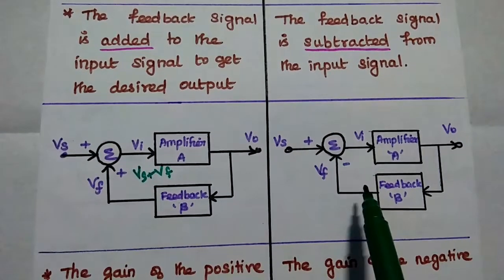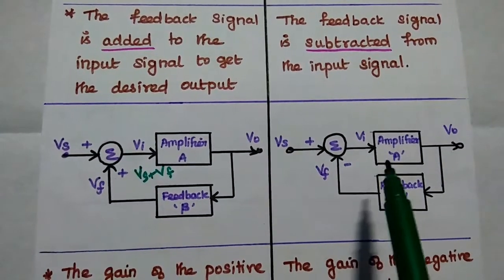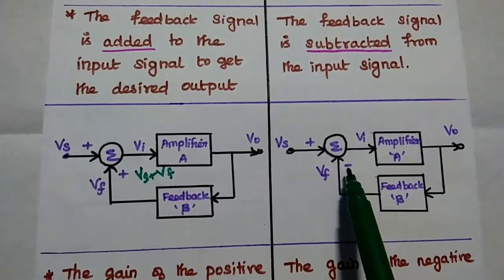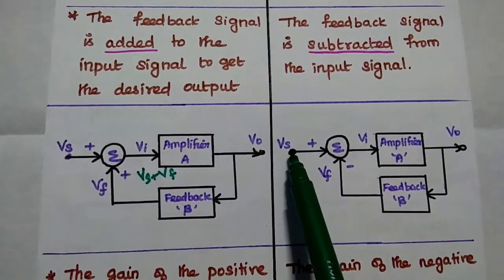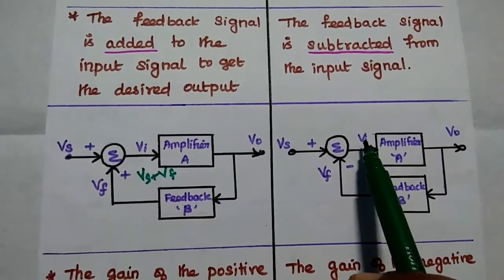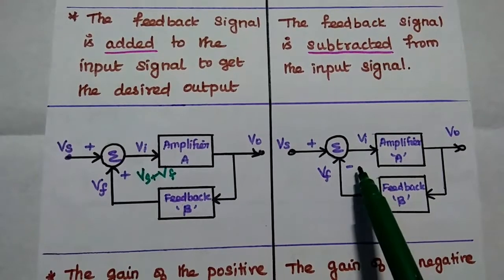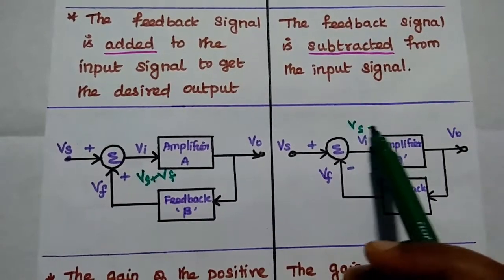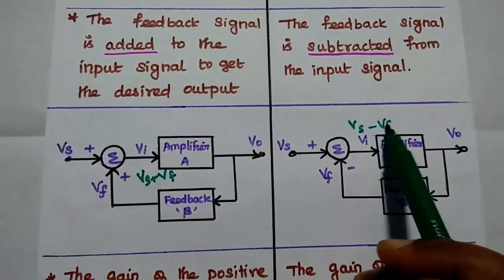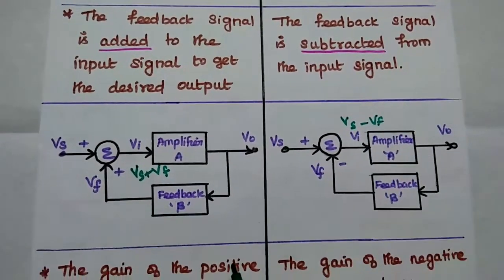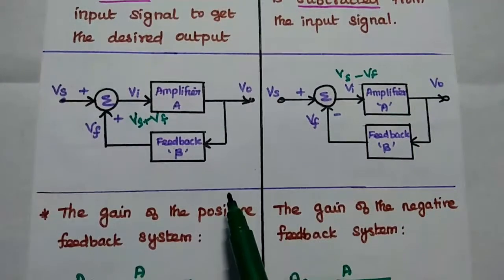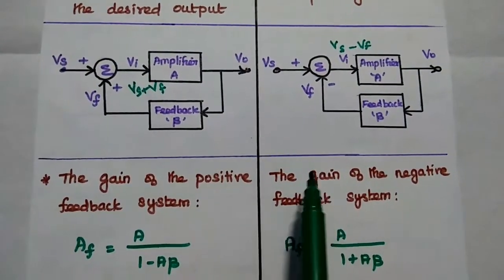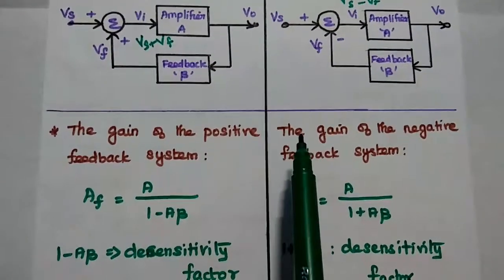But for negative feedback, the feedback signal is subtracted from the source signal. So here VI is nothing but V_ES minus V_F. That is the only difference between positive and negative feedback.